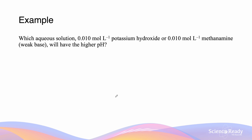Consider a 0.010 mole per liter solution of potassium hydroxide compared with a 0.010 mole per liter solution of methanamine, which is a weak base. We can compare these solutions since they have the same concentration and pHs are measured at the same temperature. Since potassium hydroxide is a strong base (group 1), it is likely to have a higher pH than methanamine, which is a weak base and therefore less dissociating.